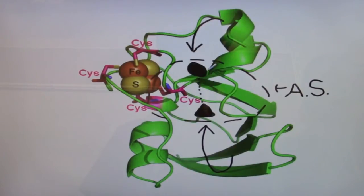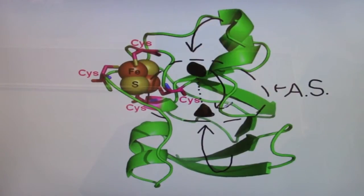Ferrodoxin then acts as a catalyst to reduce the NADP+ to NADPH through the transfer of one electron to the FAD cofactor.